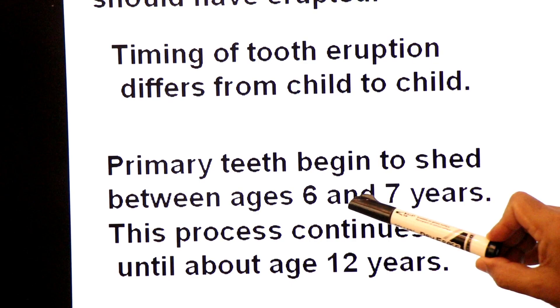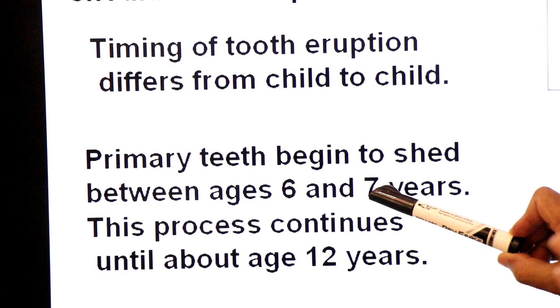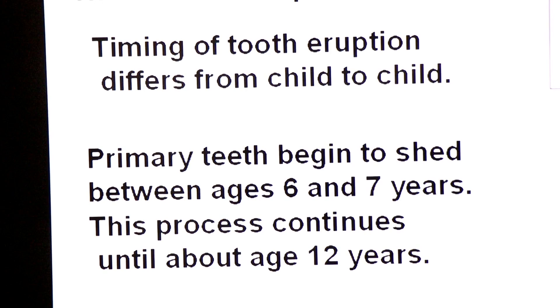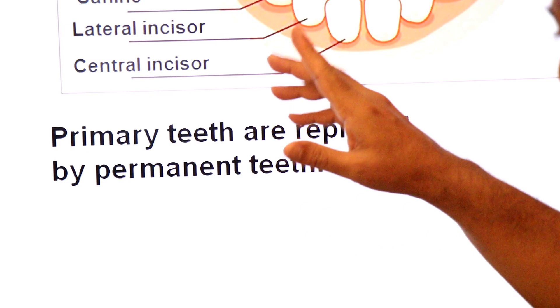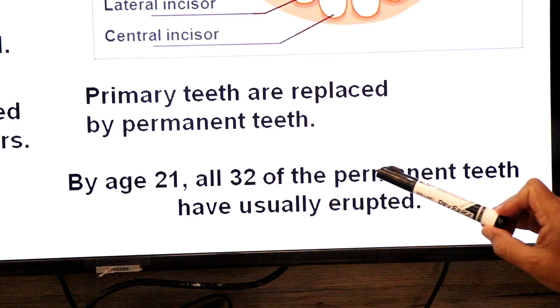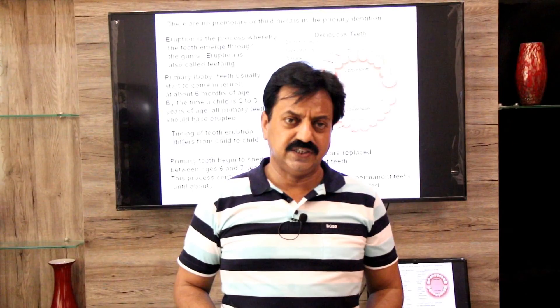Primary teeth begin to shed — that is why they are called deciduous — between the ages of six and seven years. This process continues until about the age of 12 years. These primary teeth are then replaced by permanent teeth. Primary teeth are precursors of permanent teeth. By the age of 21 years, all 32 permanent teeth have usually erupted, replacing the primary dentition.